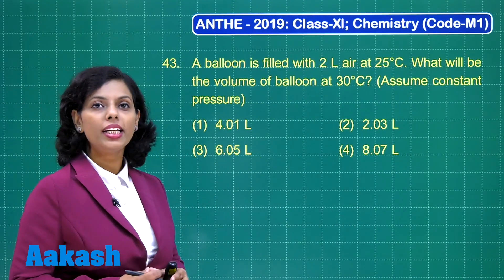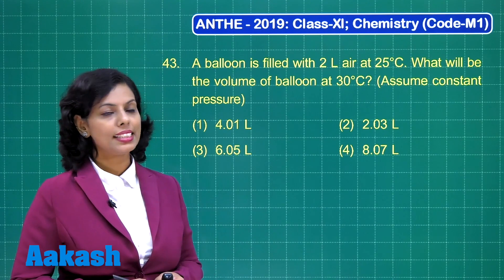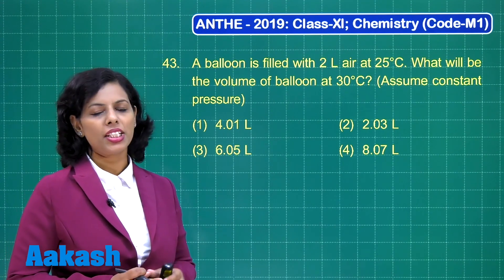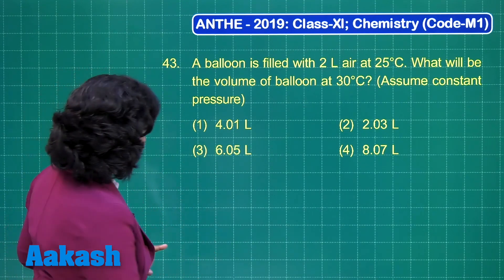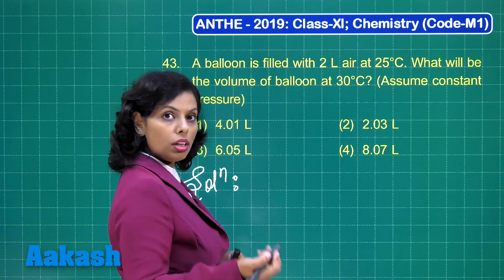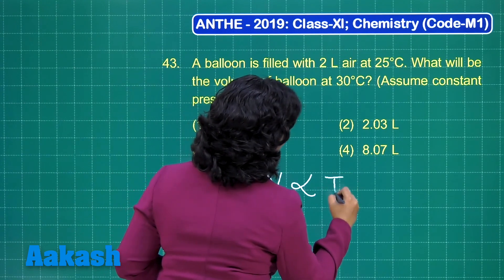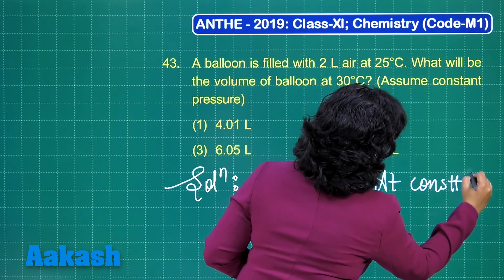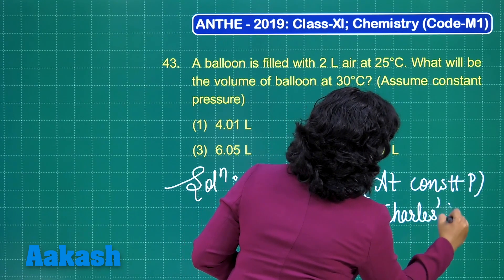A balloon is filled with 2 litre of air at 25 degree Celsius. What will be the volume of the balloon at 30 degree Celsius? Assume constant pressure. In this question we need to apply gaseous laws, specifically Charles' law. As per Charles' law, if pressure is constant, then the volume of a fixed amount of gas is directly proportional to its temperature at constant pressure.